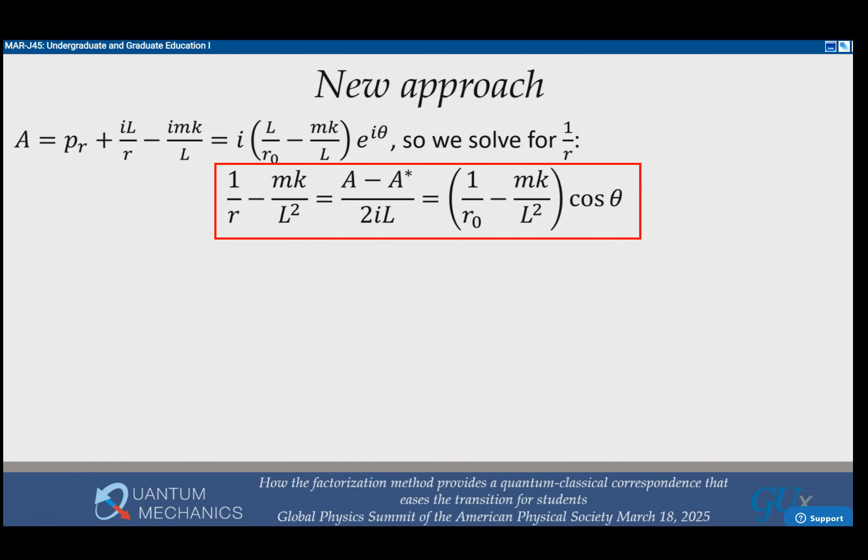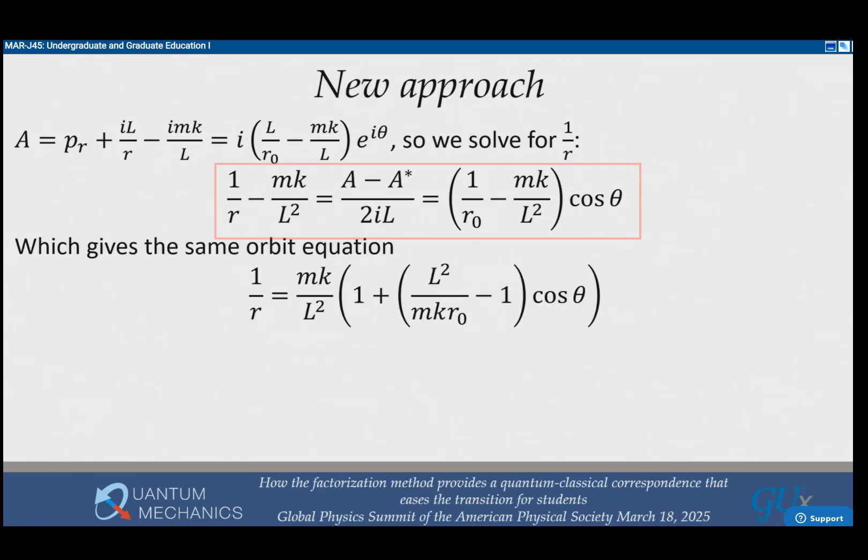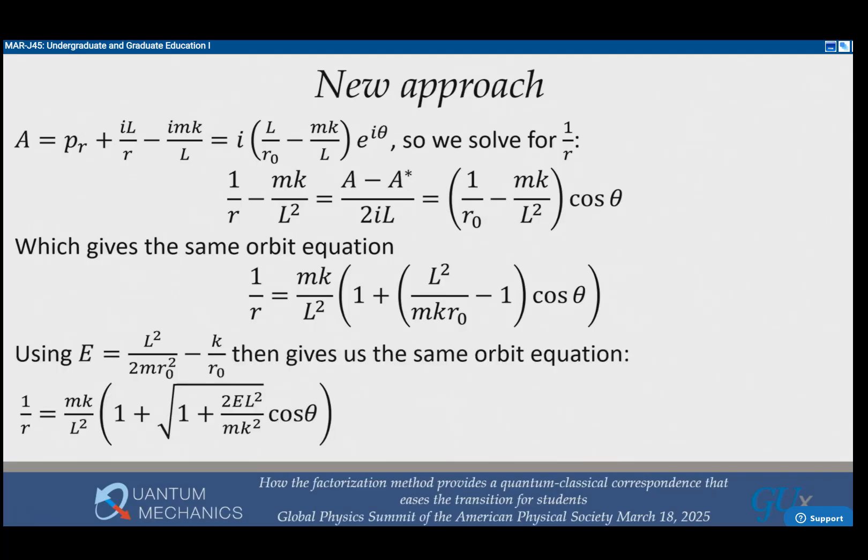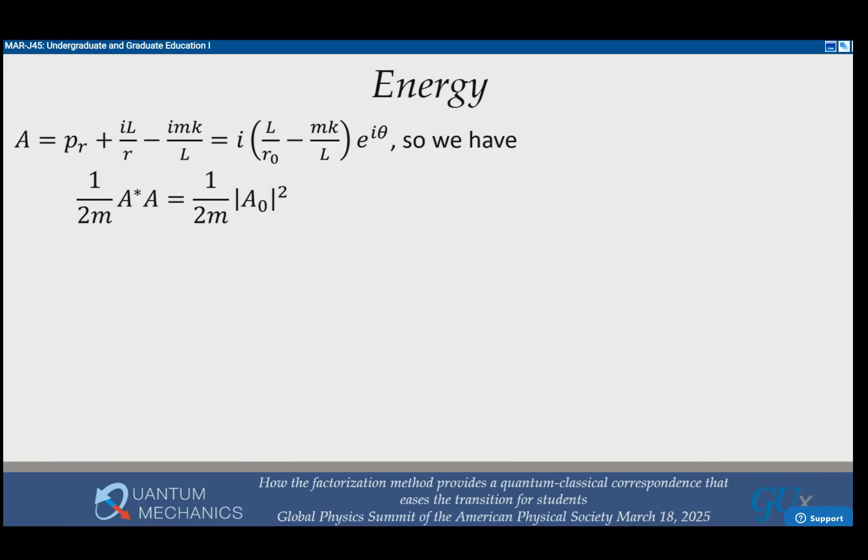Now we solve for one over r. We look at the imaginary part A minus A star, and it gives us a constant times a cosine. Just by moving the constant on the left-hand side to the right-hand side, you get the equation of the orbit, and you can put it into standard form using energy conservation. This is by far the easiest derivation of the equation of the orbit that I know of. No integrated inverse tangents, and you don't have to get the energy first.